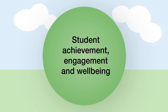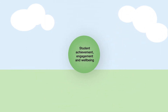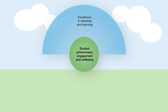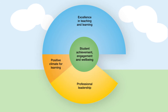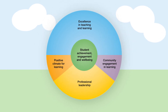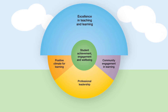Principals and teachers aim to accomplish these outcomes by using four statewide priorities: excellence in teaching and learning, professional leadership, positive climate for learning, and community engagement in learning. The size of each priority area in the model shows the comparative impact it has on students at school. For example, excellence in teaching and learning has a greater impact on student outcomes than professional leadership.